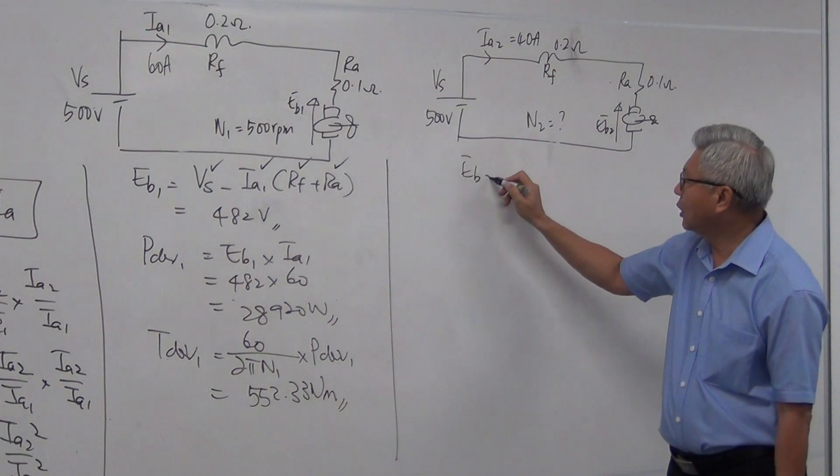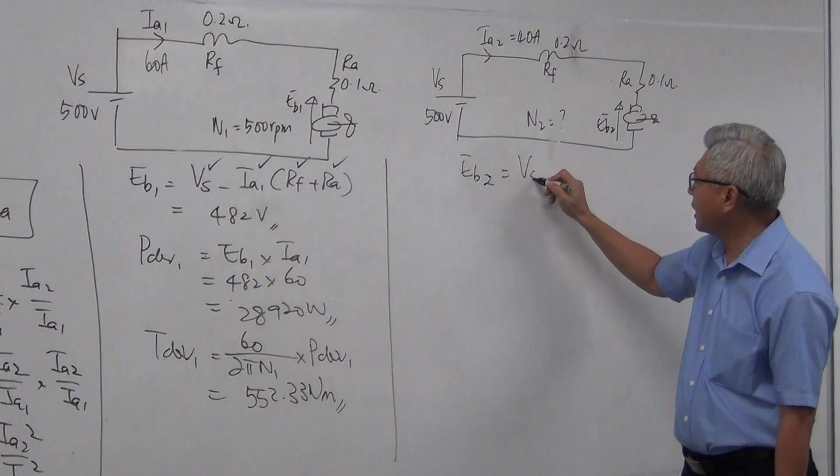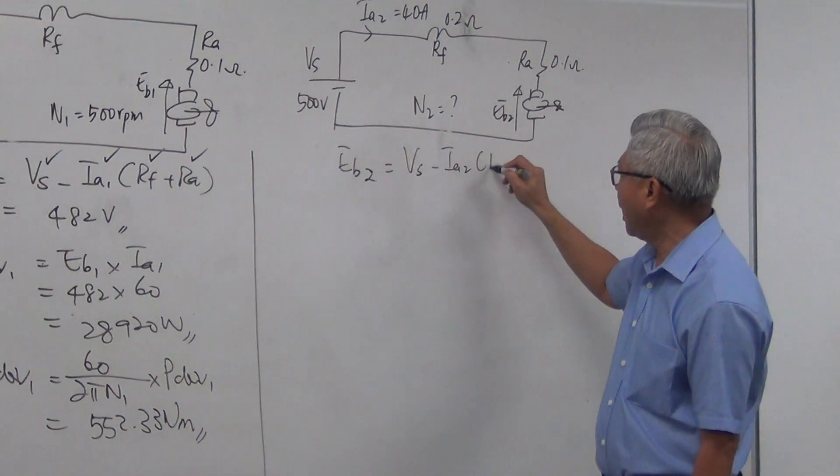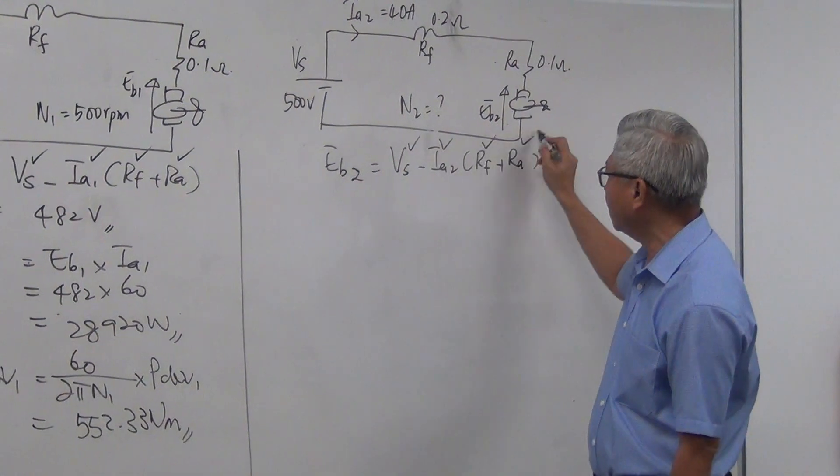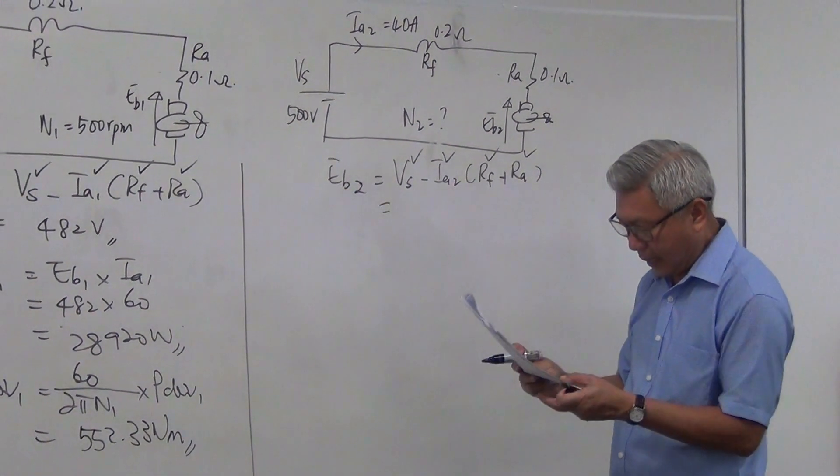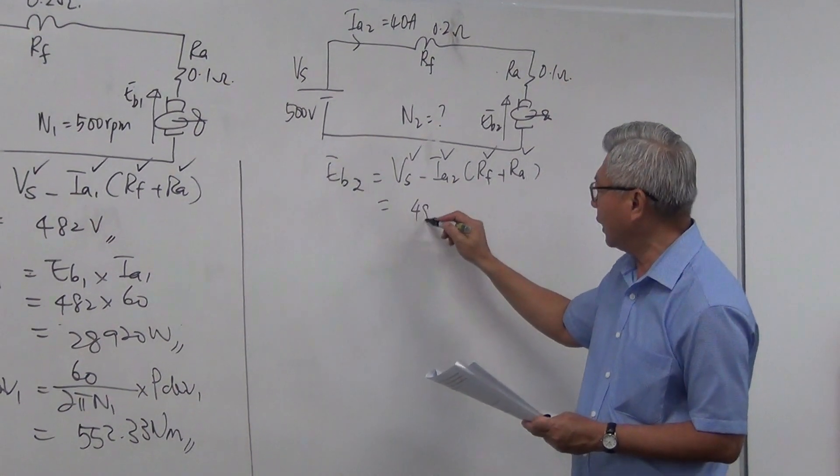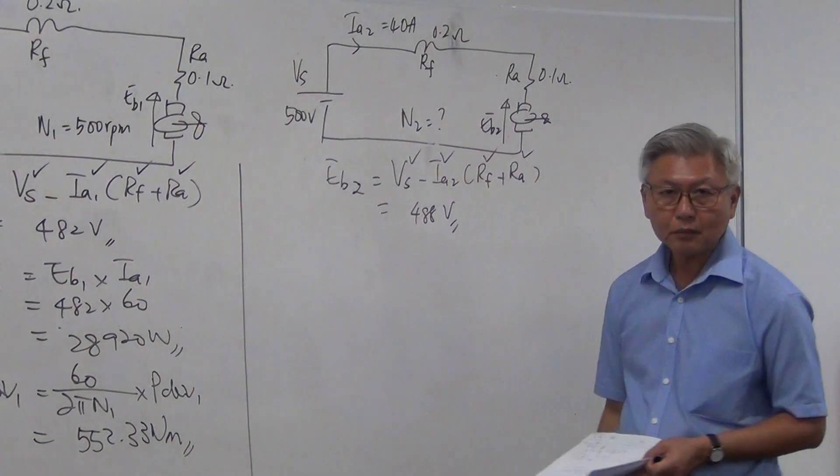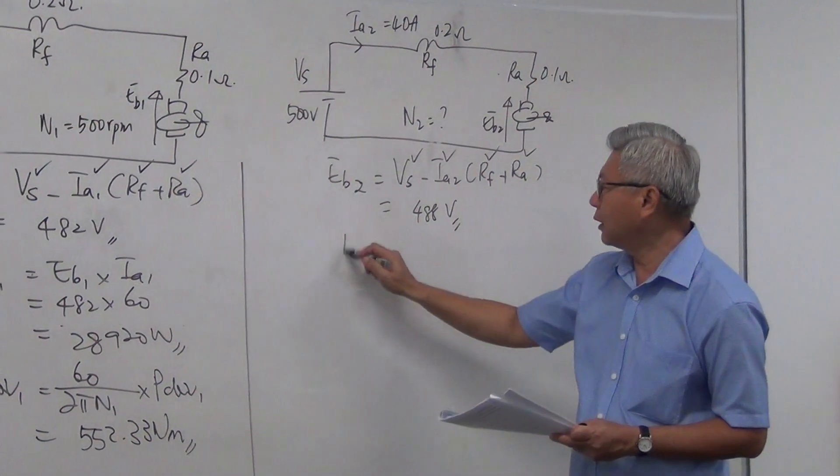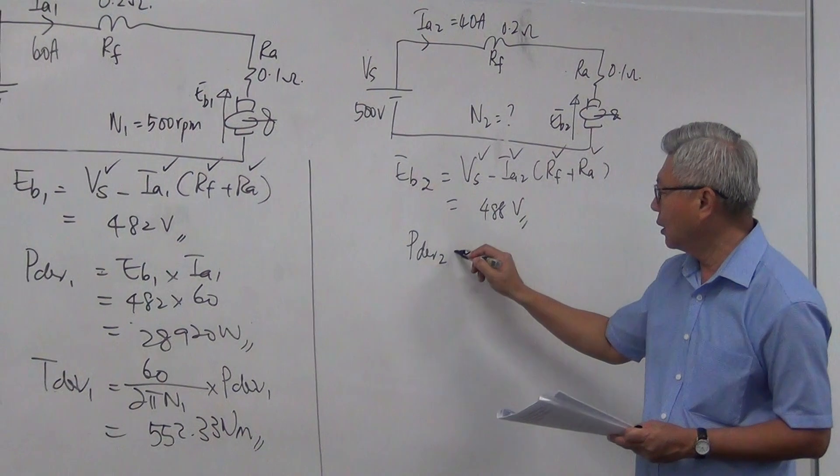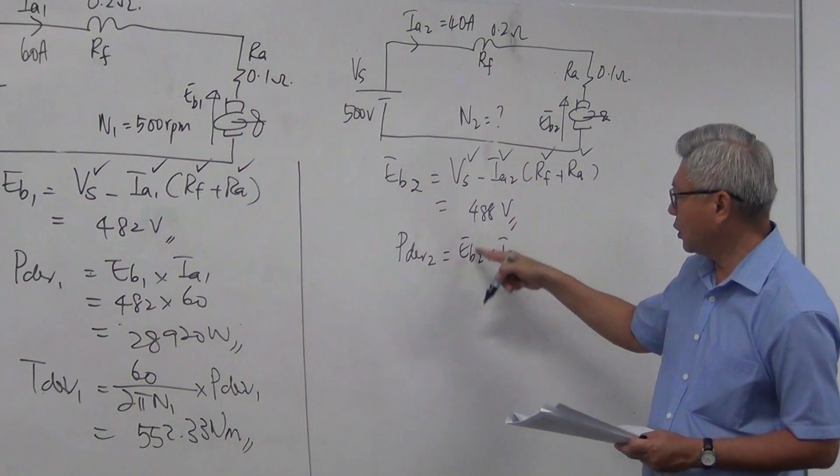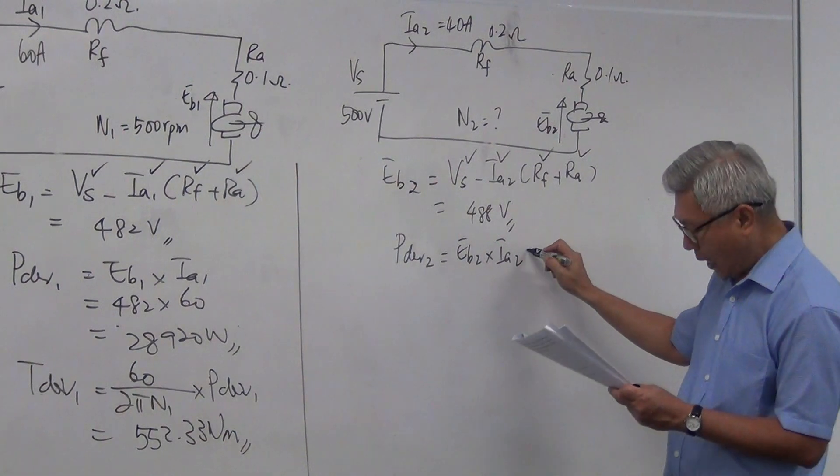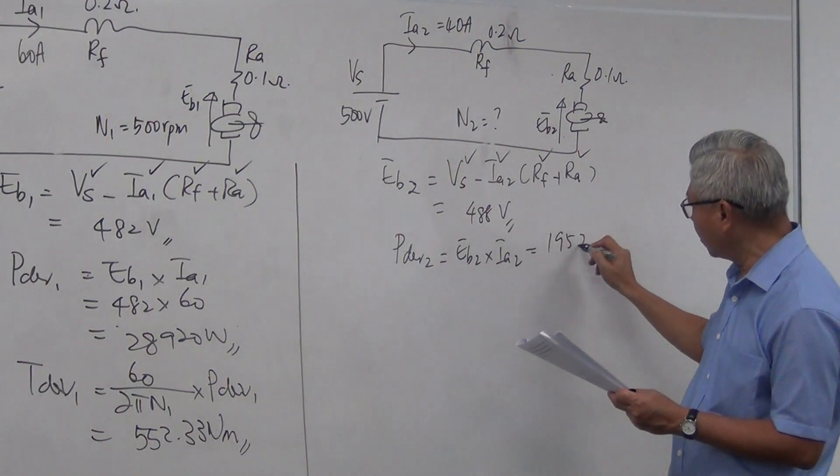EB2 equal to VS minus IA2 times RF plus RA. And I substitute all these values in there, and I get 488 volts. And I find power developed 2. It's equal to EB2 times IA2. Substitute EB2 and IA2, and I get 19520 watts.